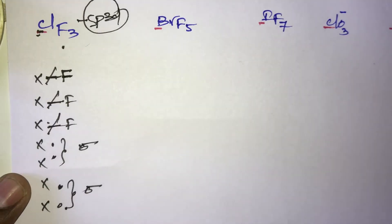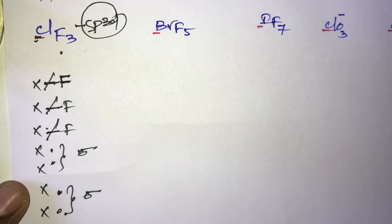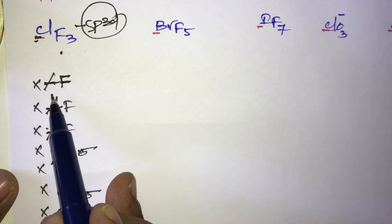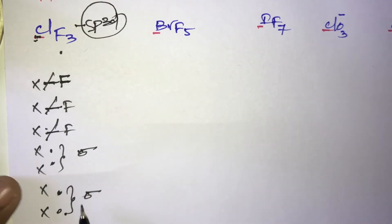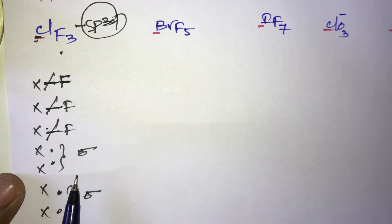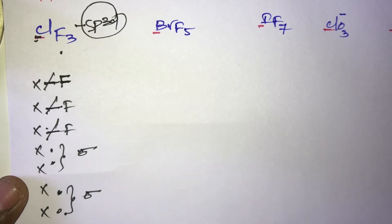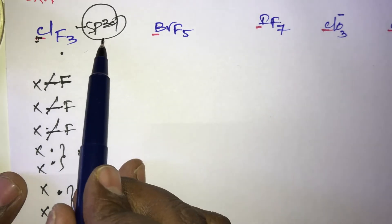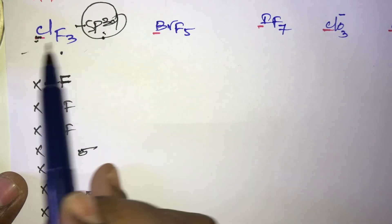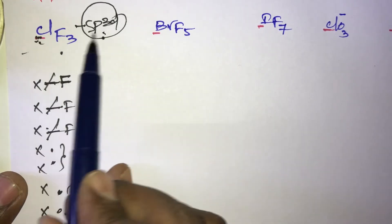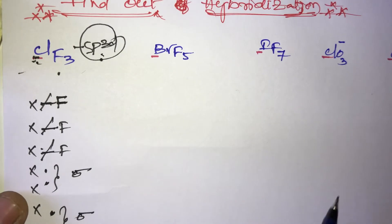Hybridization depends on the number of sigma bonds and lone pairs. Here three sigma bonds plus two lone pairs — each lone pair counted as one sigma bond — gives a total of five sigma bonds. Therefore, in the ClF₃ molecule, the hybridization of chlorine is sp³d.